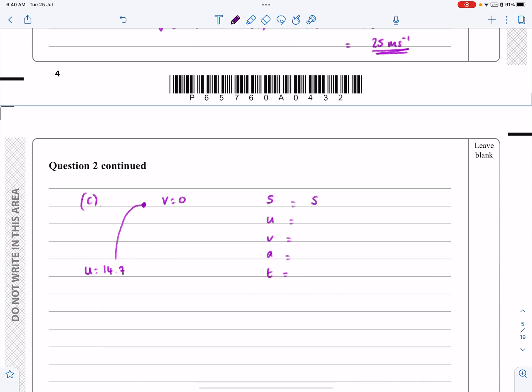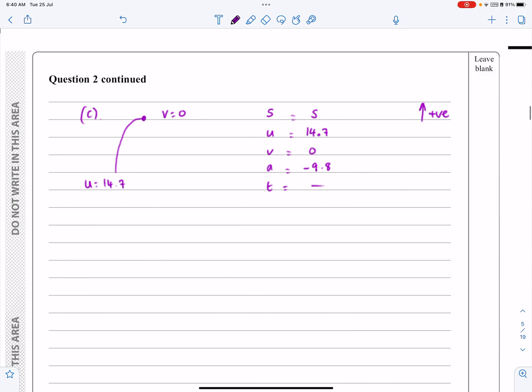So what have I got here? S is what I'm trying to find. U is 14.7. V is going to be equal to 0. The acceleration is going to be minus 9.8. I'm still taking upwards as being positive here. No interest in T whatsoever. So my classic four variables here, only one of which I'm interested in. The other three I've got. Well, so S, U, V, and A. Again, I'm assuming you guys have all done your revision.